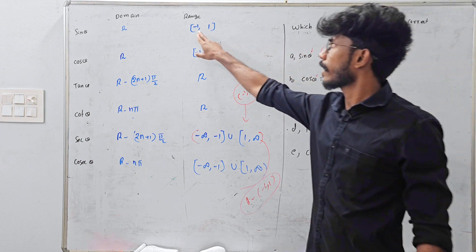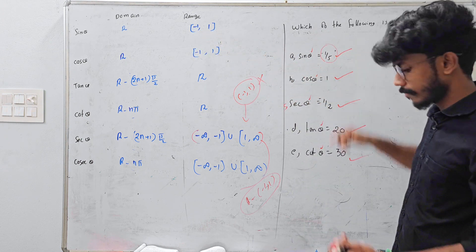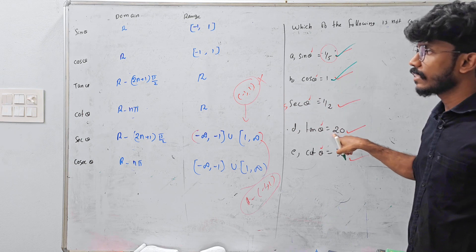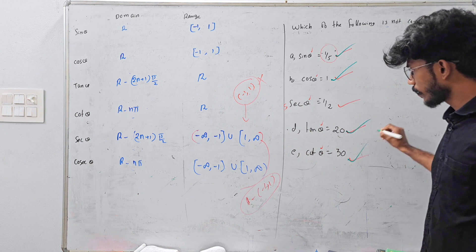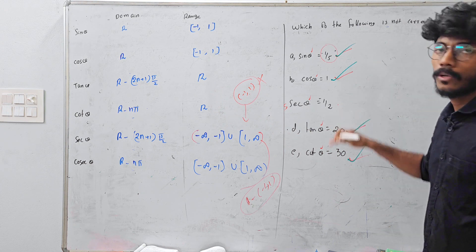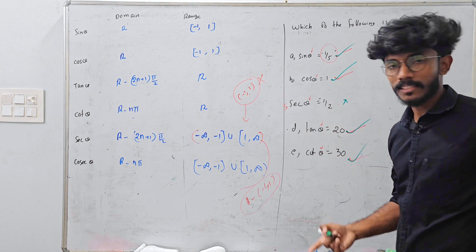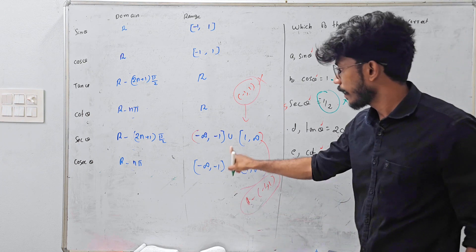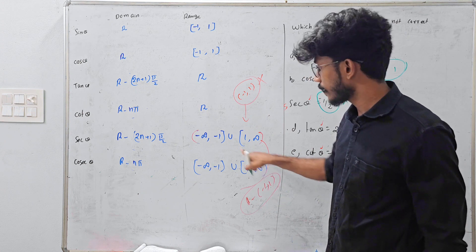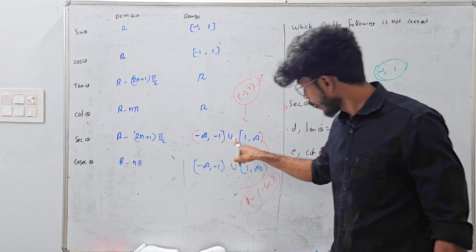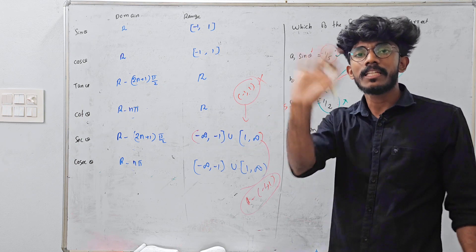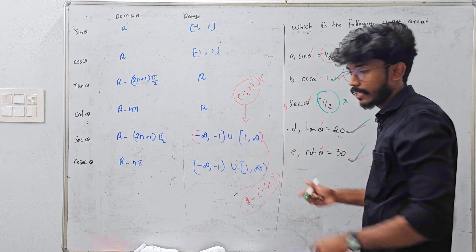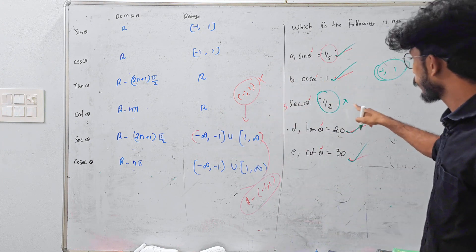Sin theta equals minus 1 by 5 — sin range is minus 1 to 1, so this is valid. Cos theta equals 1 — cos value is minus 1 to 1, so that is correct. Then tan theta equals 20 — tan is a real number and cot is a real number, so this is correct. Sec theta equals minus 1 by 2 — sec range is minus infinity to minus 1 union 1 to infinity, so the value minus 1 by 2 is between minus 1 and 1, which is not in the sec range. That is equal to the error — this is the incorrect one.